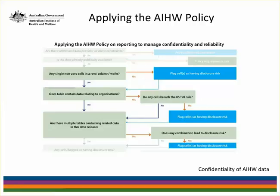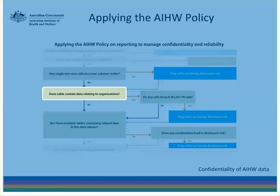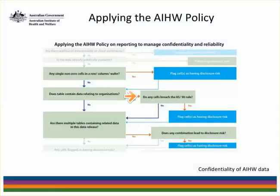The next question contains two parts. The first part is whether the table contains data relating to organisations. If so, we then ask whether there are any cells that have one or two major contributors. By a major contributor, we mean one organisation that contributes 85% or more of the cell value, or two organisations that together contribute 90% or more of the cell value. If so, we also flag these cells as having disclosure risk.